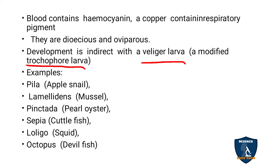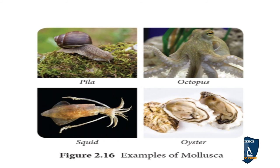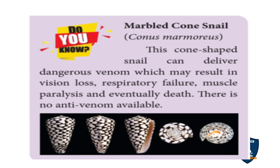Examples of Mollusca include: Pila (apple snail), Lamellidens (mussel), Pintada (pearl oyster), Sepia (cuttlefish), Loligo (squid), and Octopus (devil fish). You can see the snail, apple snail, octopus, squid, and oyster — pearl oysters are where pearls arise. There is also the marbled cone snail, which has a cone-shaped shell.